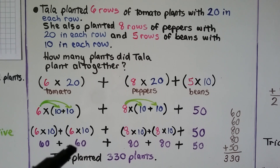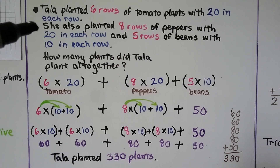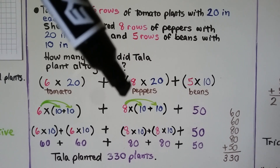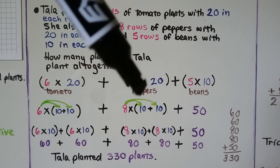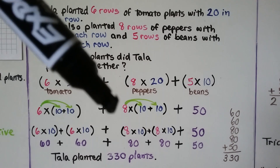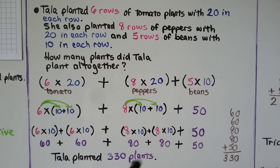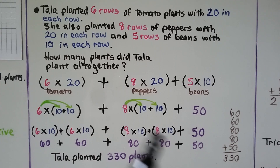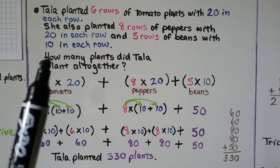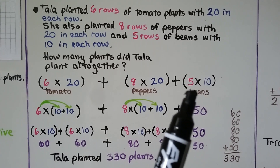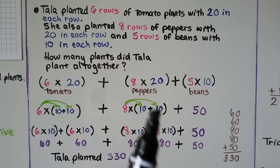Now the peppers: 8 rows with 20 in each row — 8 times 20. Using the distributive property: 8 times 10 plus 8 times 10 equals 80 plus 80. Now we have 60 plus 60 plus 80 plus 80. For the last part: 5 rows of beans with 10 in each row — that's 5 times 10, which equals 50.